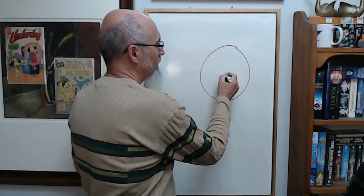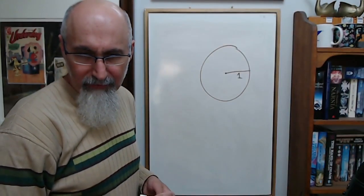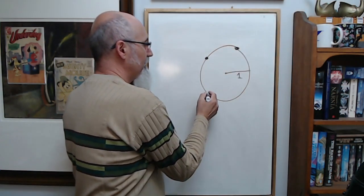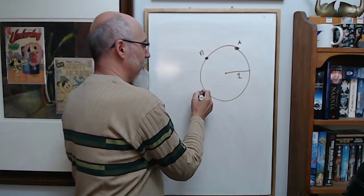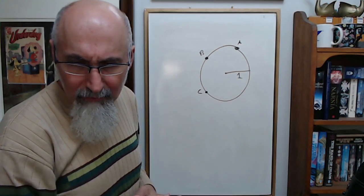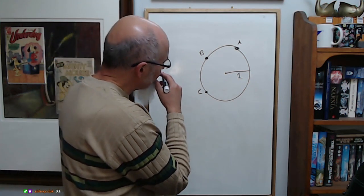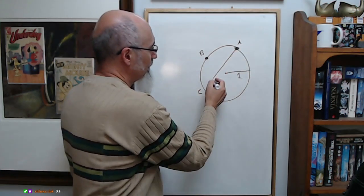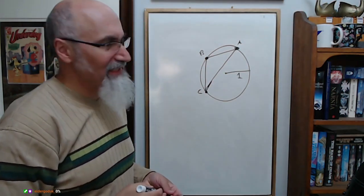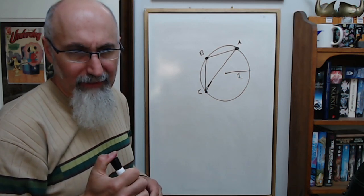They used to teach probability in high school in my part of the world, but they took probability out about 10 to 12 years ago when they revamped the curriculum and dropped 30% of the content. So basically the question is: you have a circle of radius one, points A, B, C are placed at random on a circle. What is the probability that the triangle ABC is acute — meaning all the angles have to be less than 90 degrees?